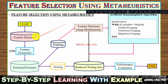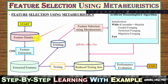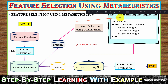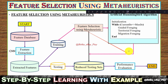Here is the process for feature selection using a meta-heuristic algorithm. First, we have a feature database containing features related to the problem — for example, facial features for face recognition. Next, we perform feature extraction using CNN. On the extracted features, we perform testing and training. Then we apply a meta-heuristic algorithm — for example, the Artificial Hummingbird Algorithm, though any meta-heuristic can be used — until the stopping criteria is met, and then we evaluate the solution.